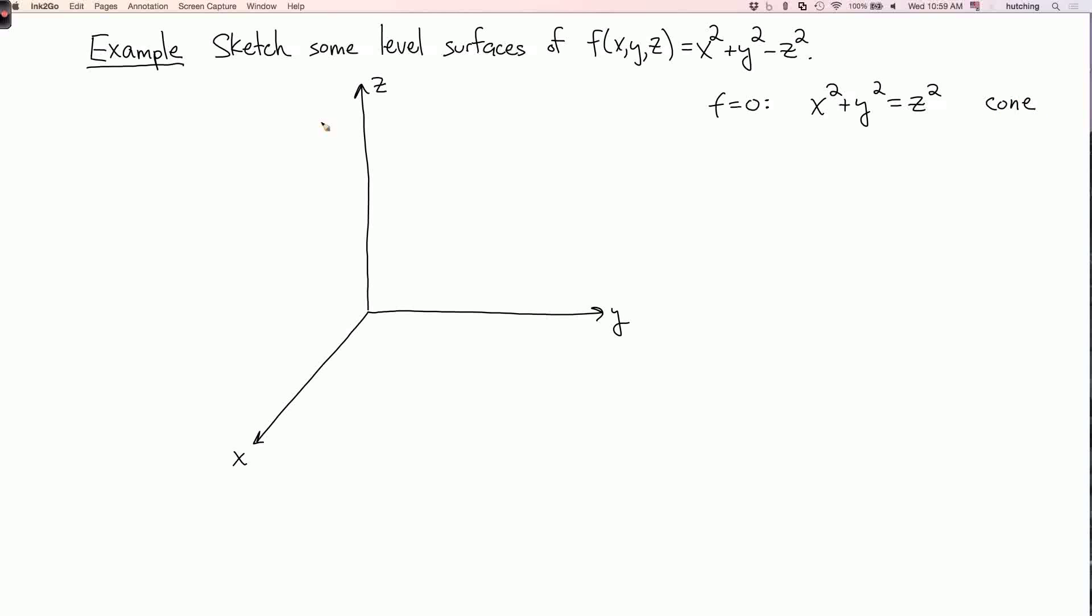So let's draw this cone. So this cone is the level surface f equals zero.